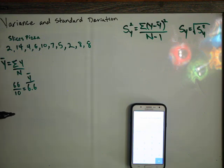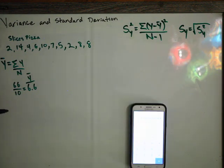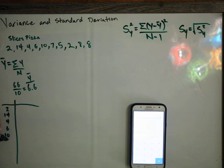Now what we need to do is find y minus y bar. So we're going to set up a little table here. And we're just going to put these values: 2, 14, 4, 6, 10, 7, 5, 2, 8, and 8 slices of pizza.